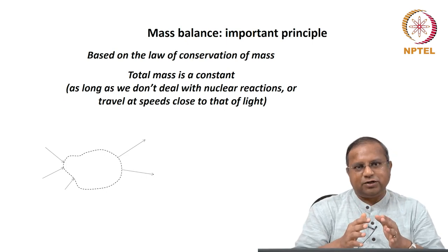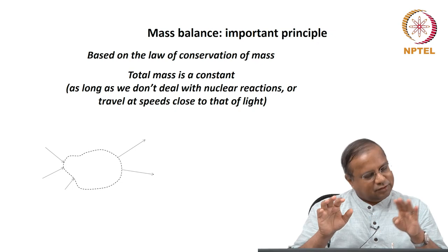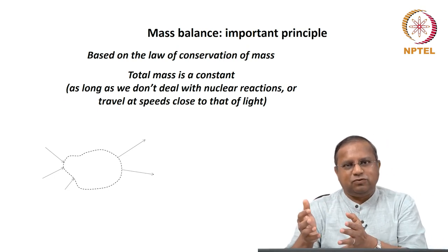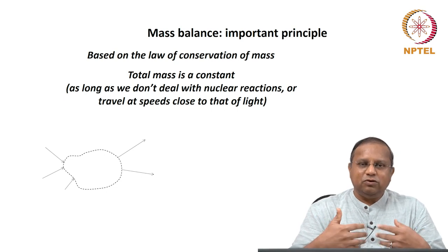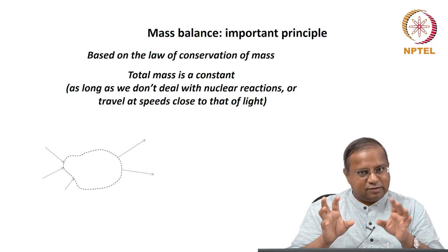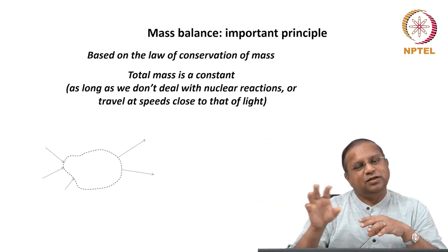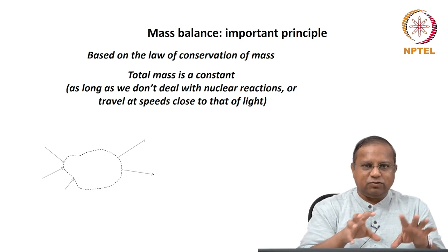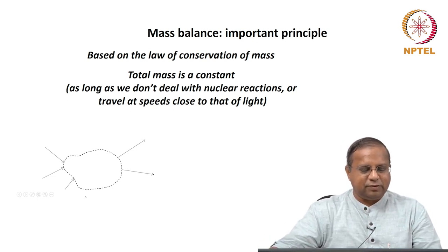A system is something that you focus your attention on. The choice of the system depends on what you want to do, and the appropriate choice comes only with practice. In some cases, the choice of a system can be very tricky, even for experienced people. For now, the system is shown by what is inside the dotted lines. These dotted lines give the periphery of the aspect we need to focus on — that is our system, and this dotted line represents the boundaries.